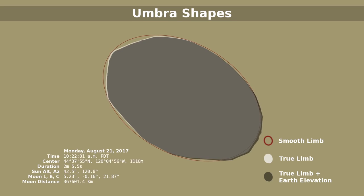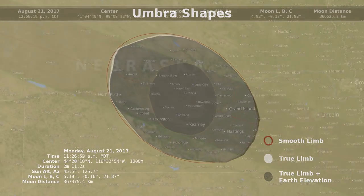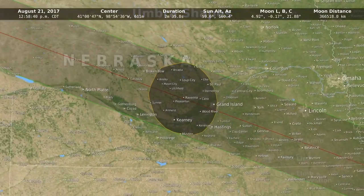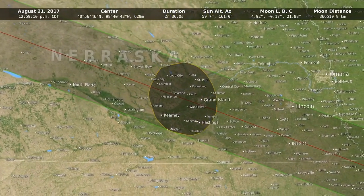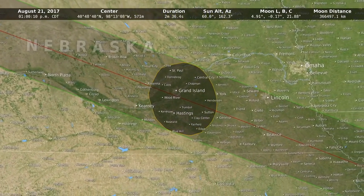But it hasn't actually been seen in exactly this way before, where we calculate those circumstances for every point on the map and draw that shape.